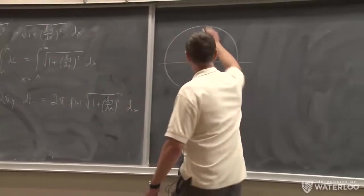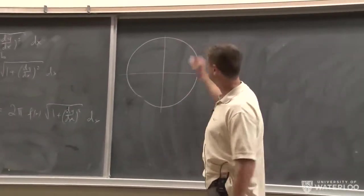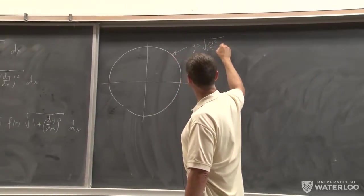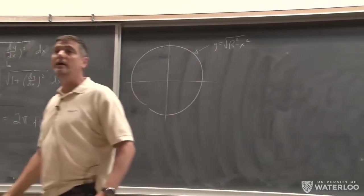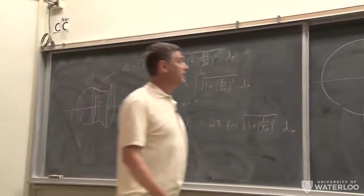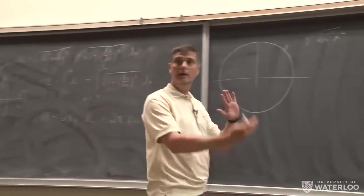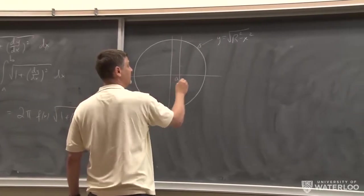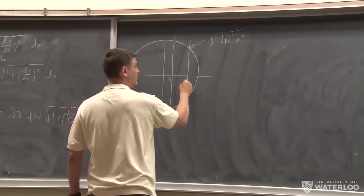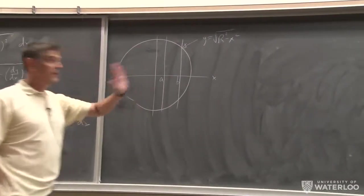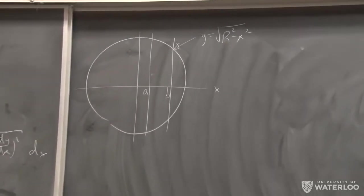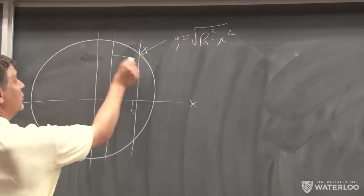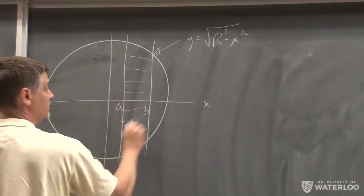If you have a sphere of radius R, given by y = √(R² − x²), and you want to calculate the surface area of a portion of that sphere — a portion that lives between two planes, say x = a and x = b — you can find the surface area of the portion of the sphere that lies between those two planes.